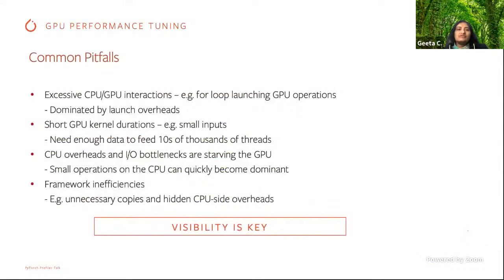Some common pitfalls when migrating to GPUs from CPUs include excessive CPU-to-GPU interactions. For example, if you are looping through and launching operations on the GPU, that can cause a lot of back and forth between the CPU and GPU. Similarly, if your GPU kernels are very short — for example, processing many small inputs — you could be going back and forth and will need a lot of data to keep all the GPU threads busy.